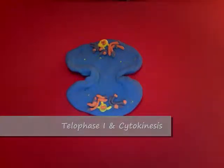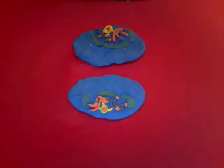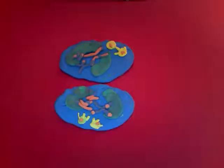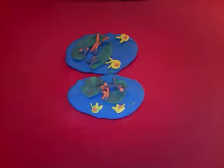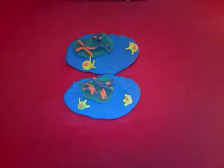Telophase I. At the beginning of telophase I, each half of the cell has a complete haploid set of replicated chromosomes. Each chromosome is composed of sister chromatids. One or both chromatids include regions of non-sister chromatid DNA.